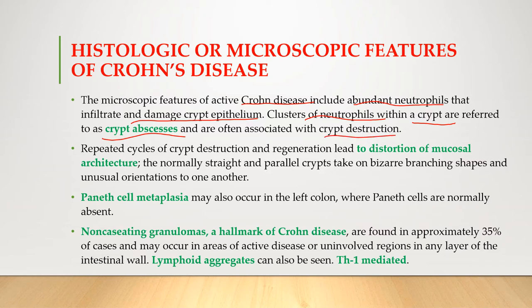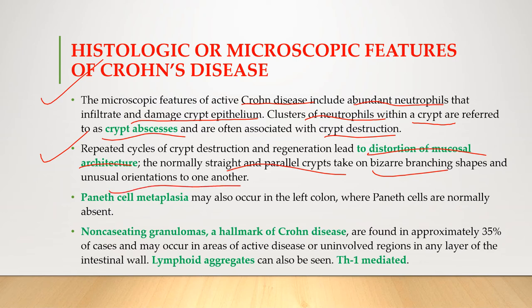The neutrophils that appear in the crypts destroy them and form crypt abscesses, which is the first finding in Crohn's disease. Repeated cycles of crypt destruction and regeneration lead to distortion of the mucosal architecture. The normally straight and parallel crypts take bizarre branching shapes and unusual orientations to one another.